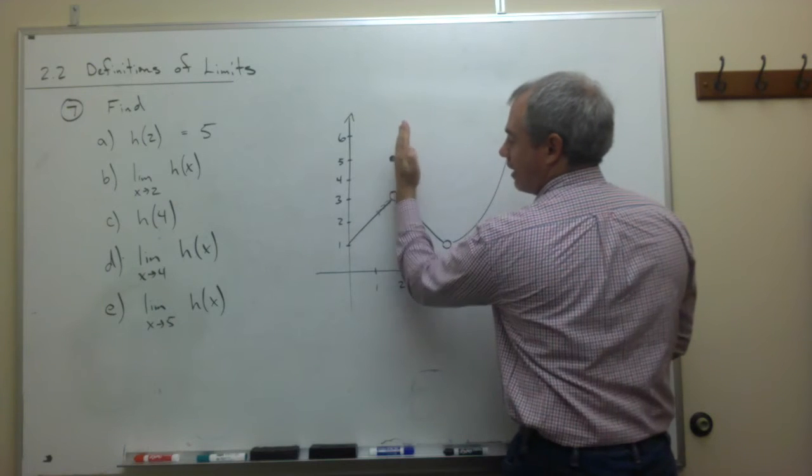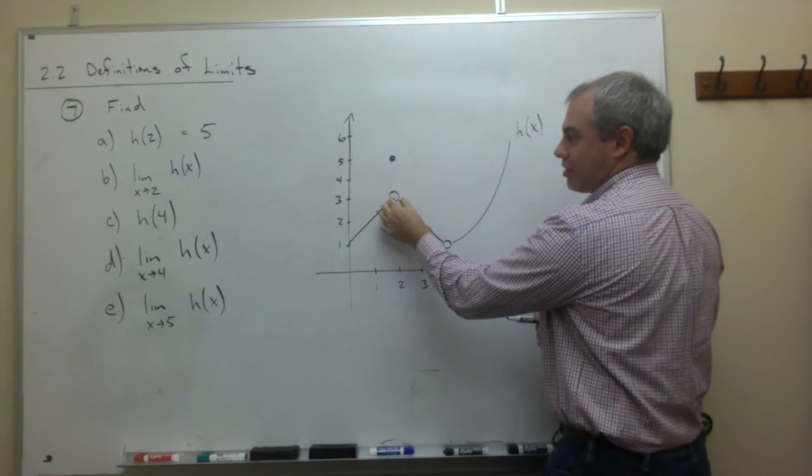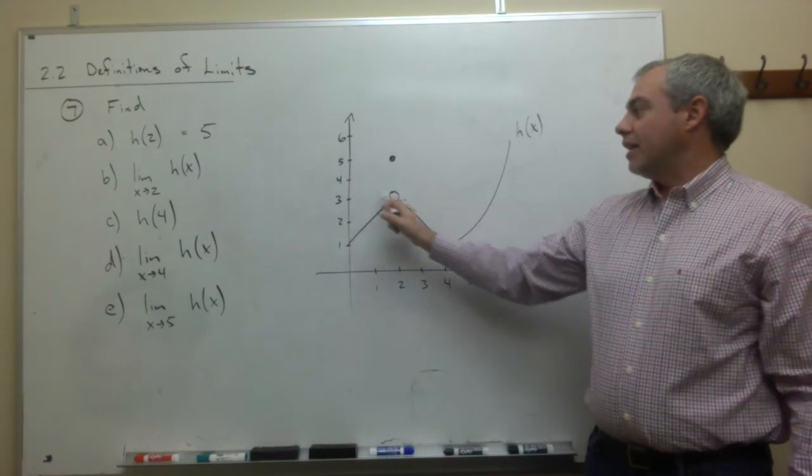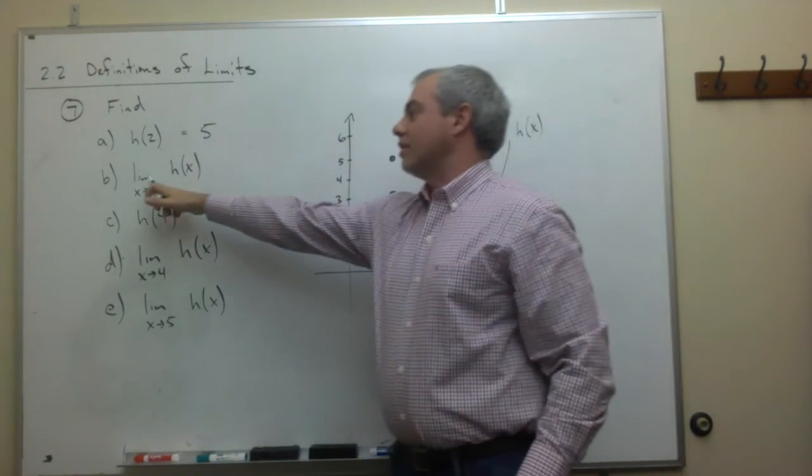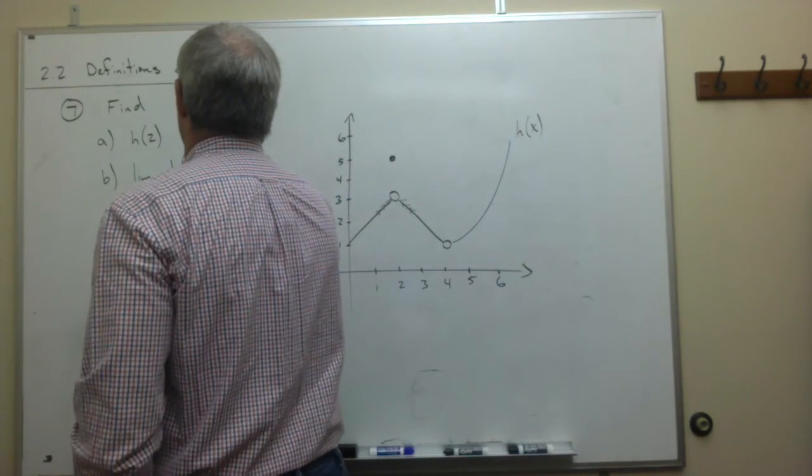You'd guess that these two lines are going to hit, and you'd guess that they would hit at 3. And so we say that the limit as x goes to 2 of h of x is 3.